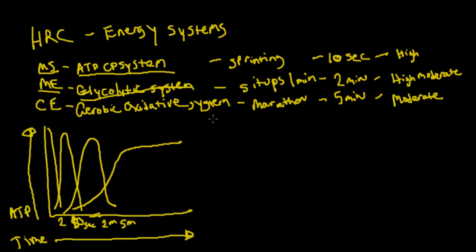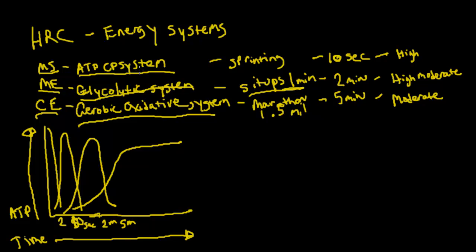For muscle endurance, we're testing the glycolytic energy system — for example, sit-ups for one minute, linking back to the last lecture. For cardiovascular endurance, we test the aerobic oxidative energy system, and a one-and-a-half mile run would accomplish that. Hopefully this shows how health related components link to energy systems and how the energy systems work together when you start exercising. In the next lecture we'll talk more about ATP and how it works to supply us with energy.